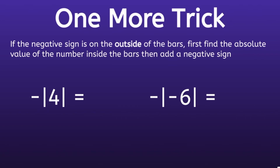And then we add the negative sign. The first one is the negative absolute value of 4. So the first thing we have to do is find the absolute value of the number inside the bars. And the absolute value of the number 4 is just 4. Now we need to add that negative sign outside the bars. So the negative absolute value of 4 is negative 4.